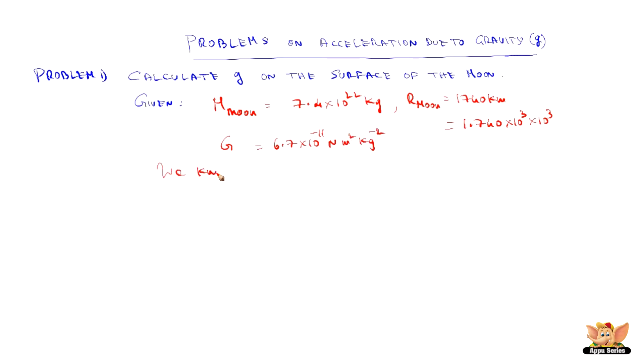Now we know the formula for g is G capital G, that is gravitational constant, into mass of the moon divided by radius of the moon whole square.